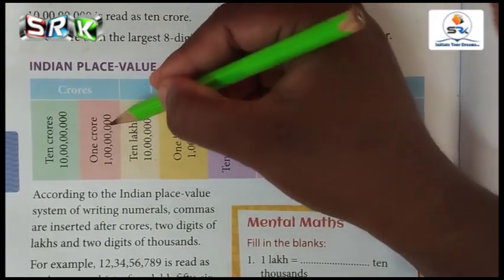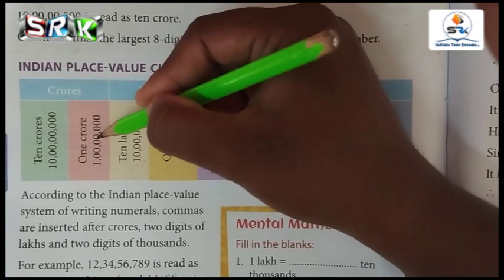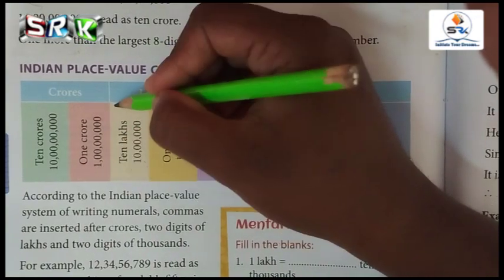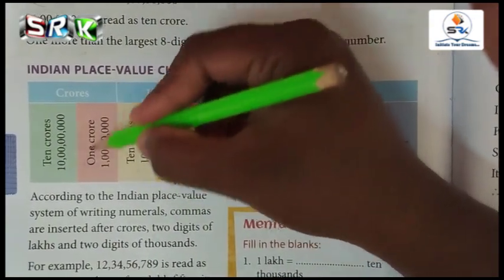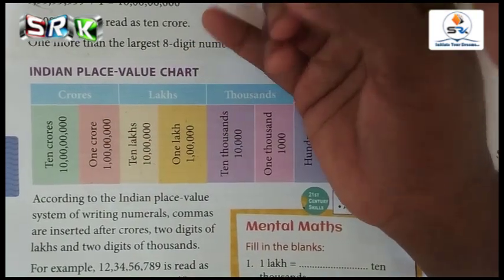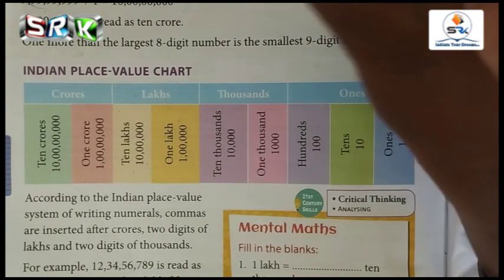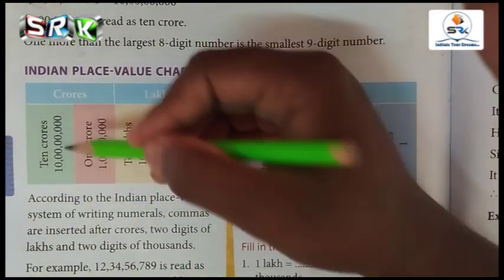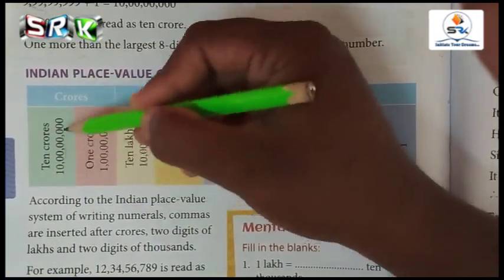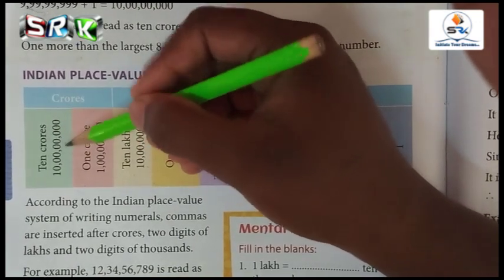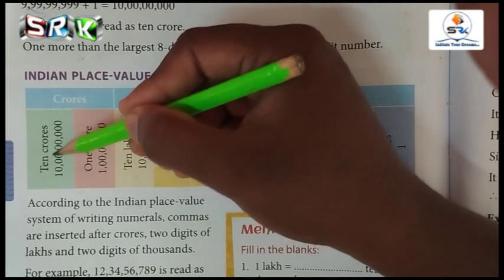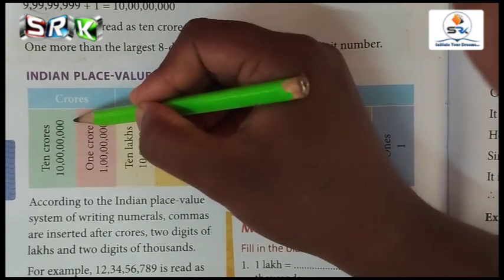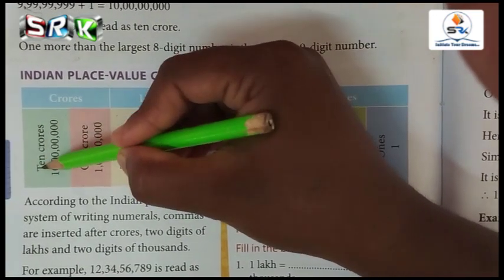First of all, see one crore. How many zeros? One, two, three, four, five, six, seven — seven zeros. One crore has eight digits. That is called one crore. So you should also learn ten crores.